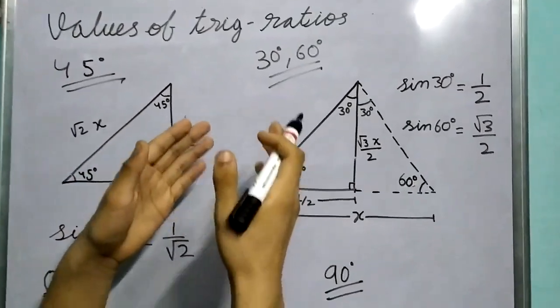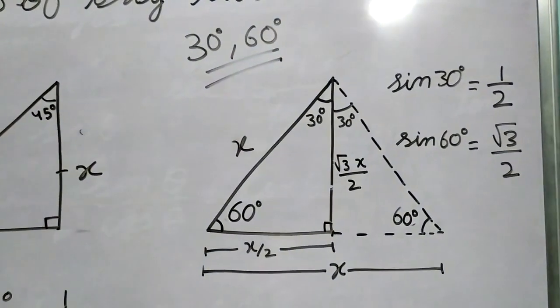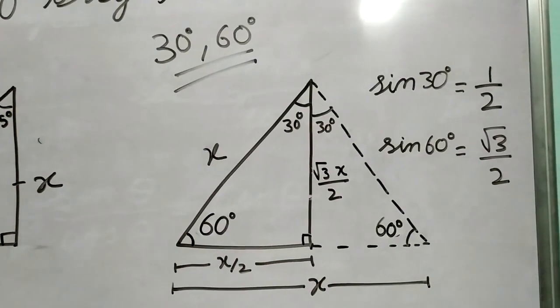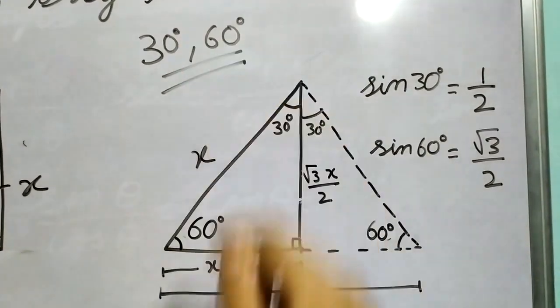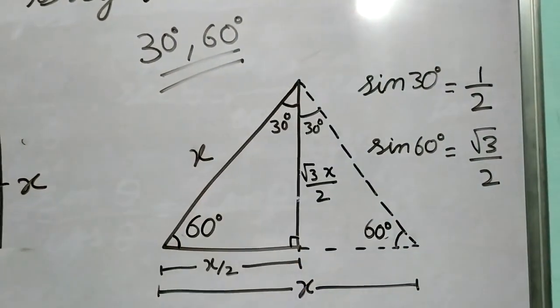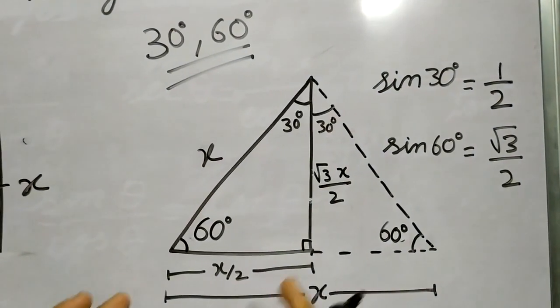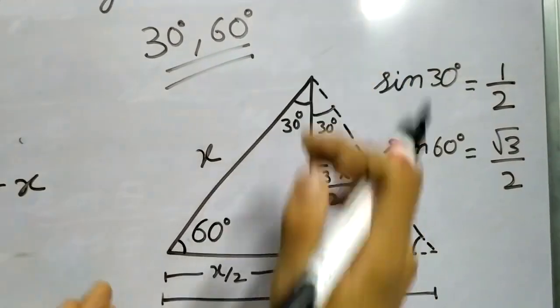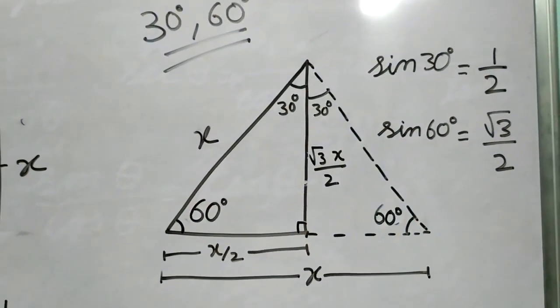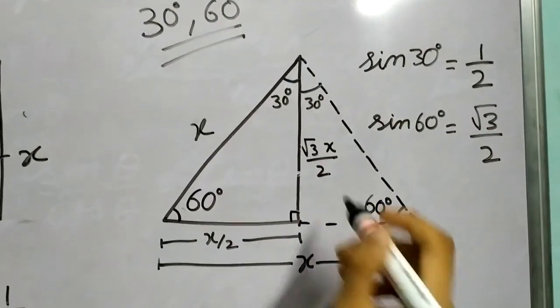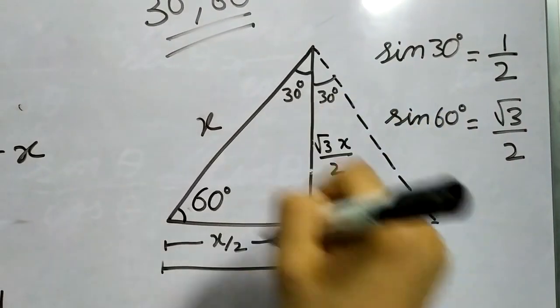And then we solved for 30 degree and 60 degree. So the clever step was to draw an equilateral triangle and then drop the perpendicular bisector. So we got this length as total length as x. So we got this as x by 2.